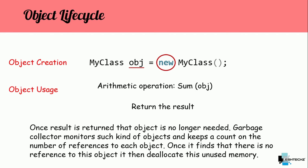Once the result is returned, that object is no longer needed. The garbage collector monitors such objects — it keeps account of the number of references to each object. Once it finds there is no reference to an object, it then de-allocates that unused memory. This particular process is known as object destruction.